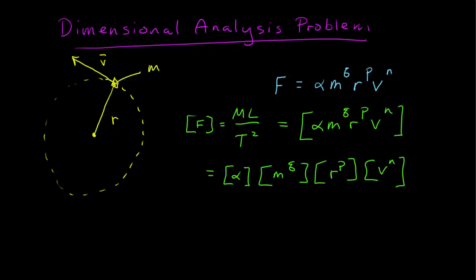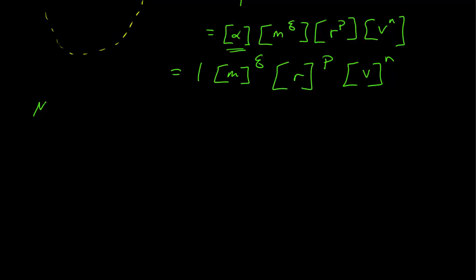And again, like scalars, that means the dimension of m to the q is equal to the dimension of m to the q power. I was told this is dimensionless, so I represent dimensionless quantities as the number one. And so this is the dimension of m to the q power times the dimension of r to the p power times the dimension of v to the n power. The dimension of mass is just mass to the q.